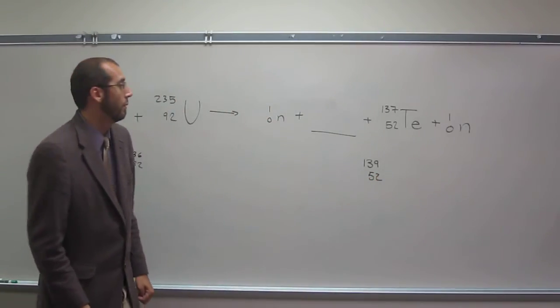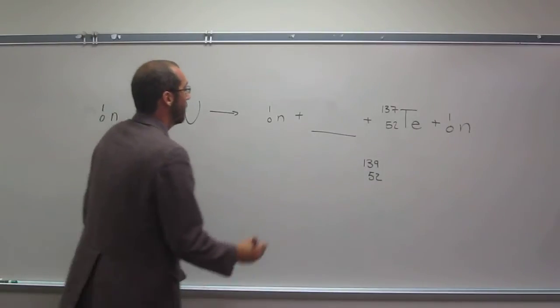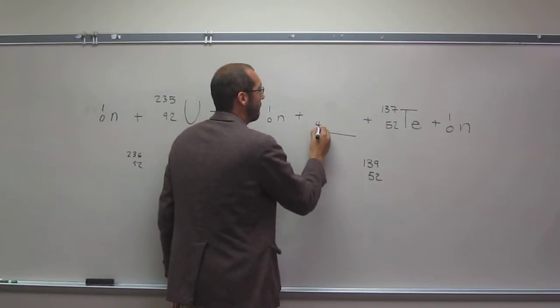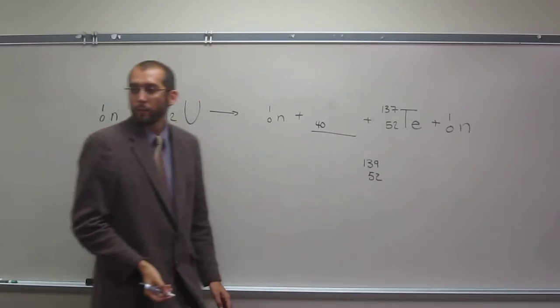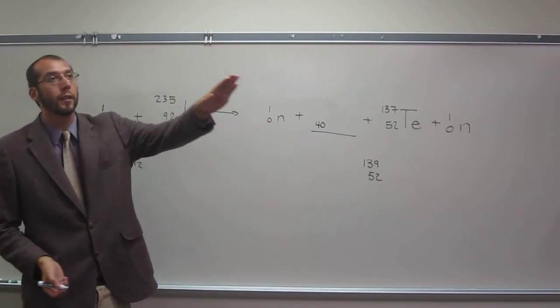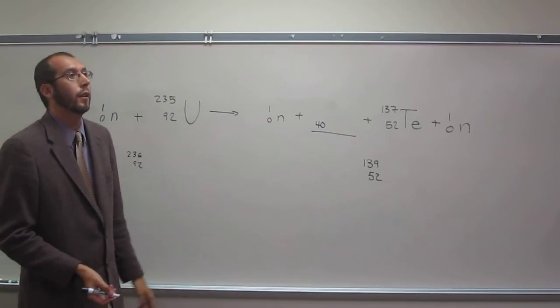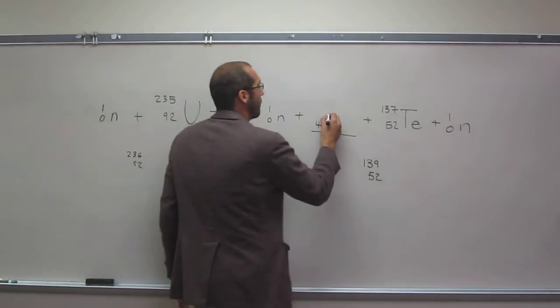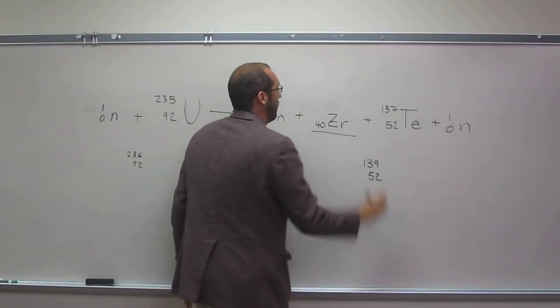So that's what we have so far. So we need 92, so this is going to be 40, right? So if we look up at the periodic table from there, we look, it's 40, 40 is zirconium.